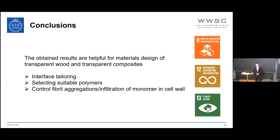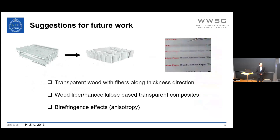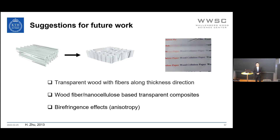For future work, most current samples are made with the fiber direction perpendicular to the thickness direction. The case where fiber direction is along the thickness direction has not yet been investigated. Additionally, since cellulose is a birefringent material and transparent wood is anisotropic, the effects of birefringence on the anisotropic scattering of transparent wood also need to be studied.